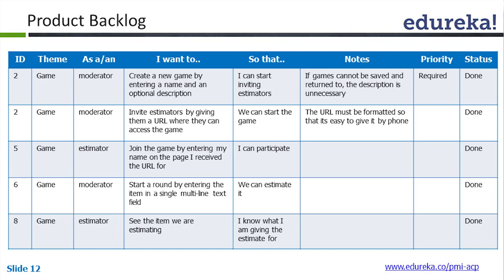Moving to the third column — 'as a' — using yesterday's example: as an HR manager, I should be able to do a search so that I can view the resumes. So 'as a' is the persona — here it's HR manager. 'I want to' is what you want to actually perform — I want to perform a search. 'So that' is why — so that I can view or download the resume. 'Notes' is for additional TAS or special notes — this is optional, you might have it or not.